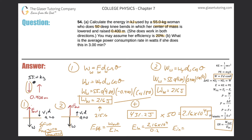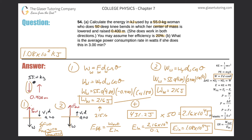2.16 × 10⁴ divided by 0.2 gives approximately 108,000 J, or 1.08 × 10⁵ joules. The problem asks for the answer in kilojoules, so we divide by 1,000 — subtracting 3 from the exponent — giving a final answer of 1.08 × 10² kilojoules.